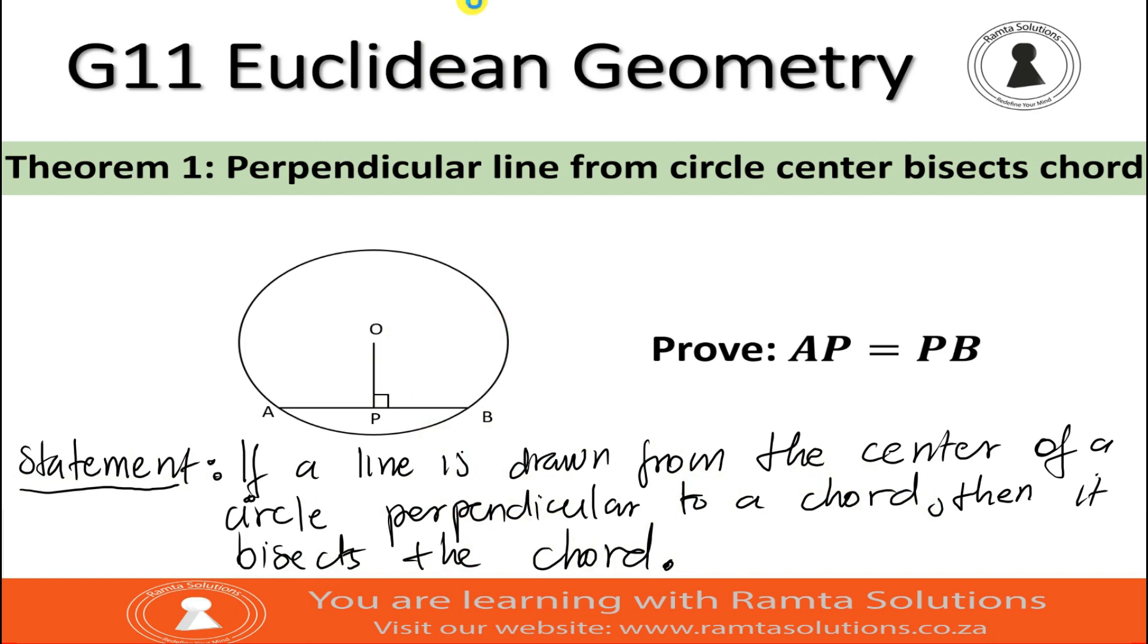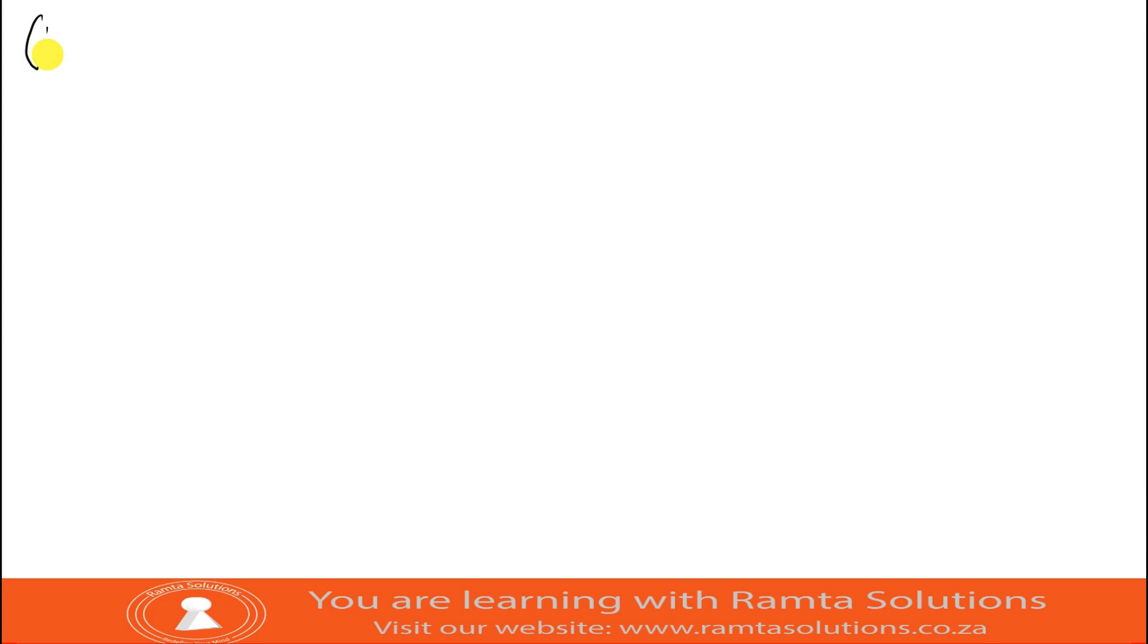So when you use this theorem, let me go to the next page. When you use this theorem, a reason that you're going to give at all times, if you use this theorem, you will be saying perpendicular from center bisects the chord. Whenever you use this theorem, you will give this reason.